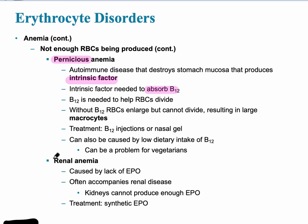The next type of anemia is renal anemia, which is a problem with the kidney. Damage to the kidney can prevent the production of erythropoietin, the hormone that stimulates the red bone marrow to make red blood cells.